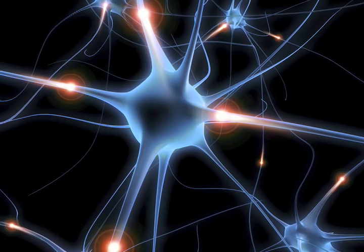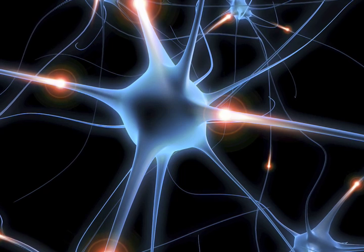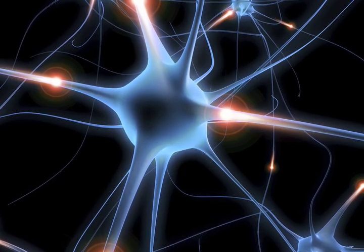Neurons are the core components of the brain, the vertebrate spinal cord, the invertebrate ventral nerve cord, and the peripheral nerves.